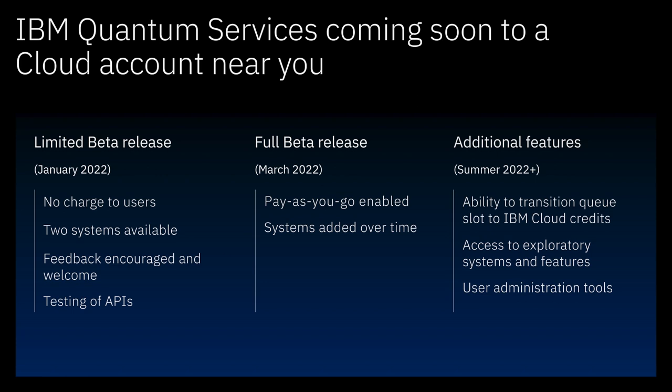We're going to continue to add exciting exploratory systems and features, and continue to make it simpler to use overall. During this process, all your current access models and contracts will remain unchanged, and we're going to continue to work with you if you're an existing quantum network member. That's what we have in store for you in terms of quantum as a service. We're really excited to embark on this journey with you. Back to you, Blake.